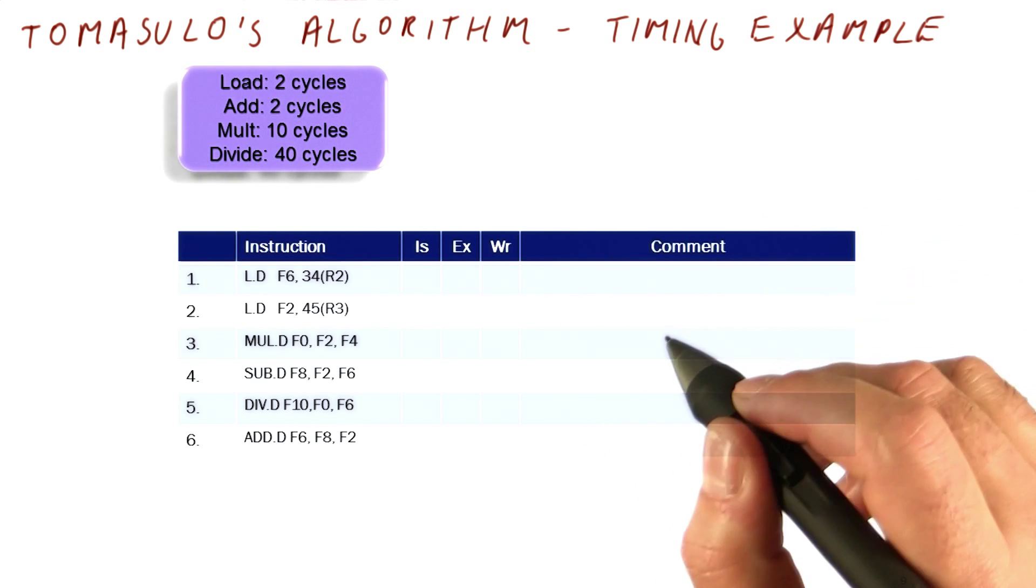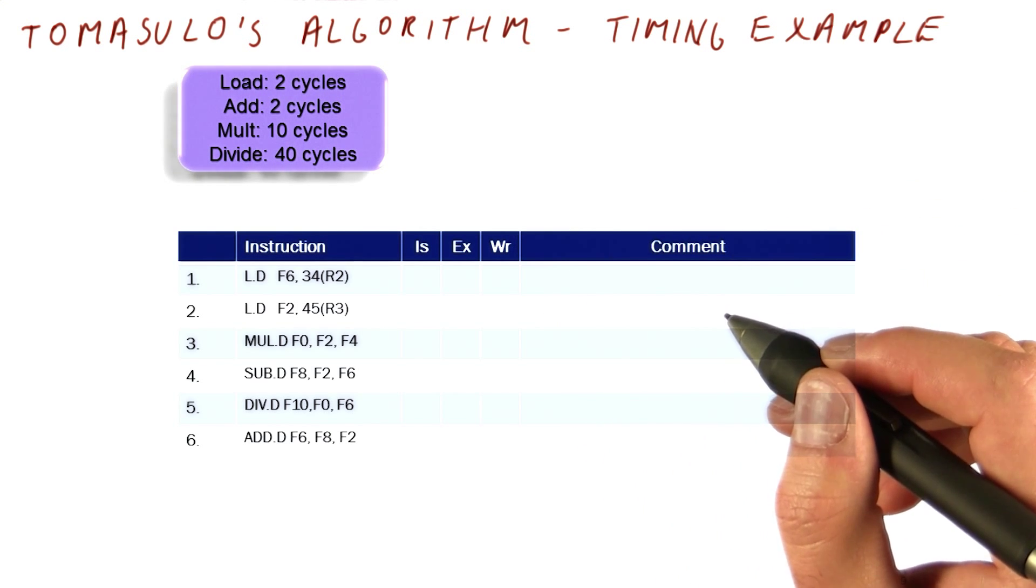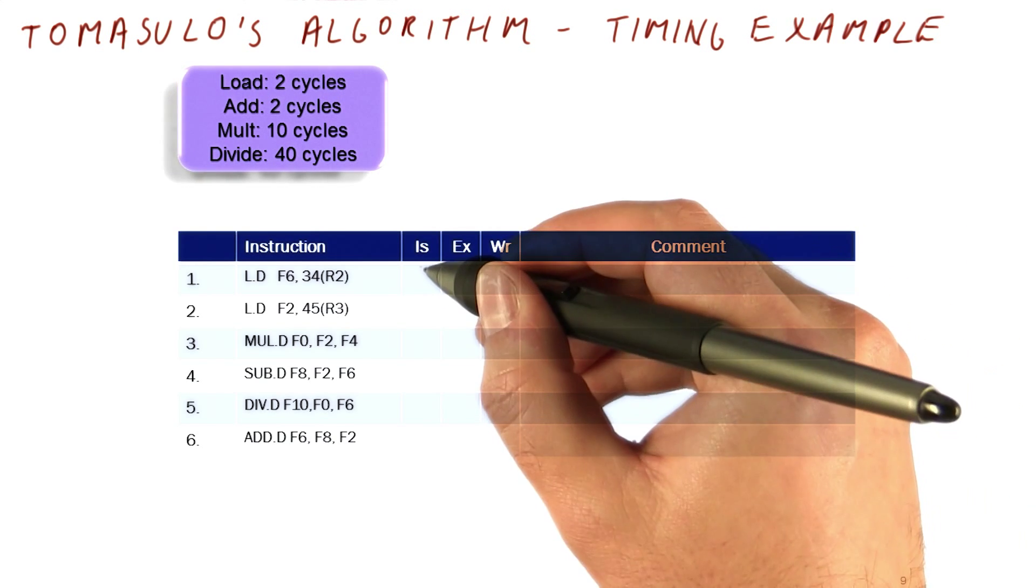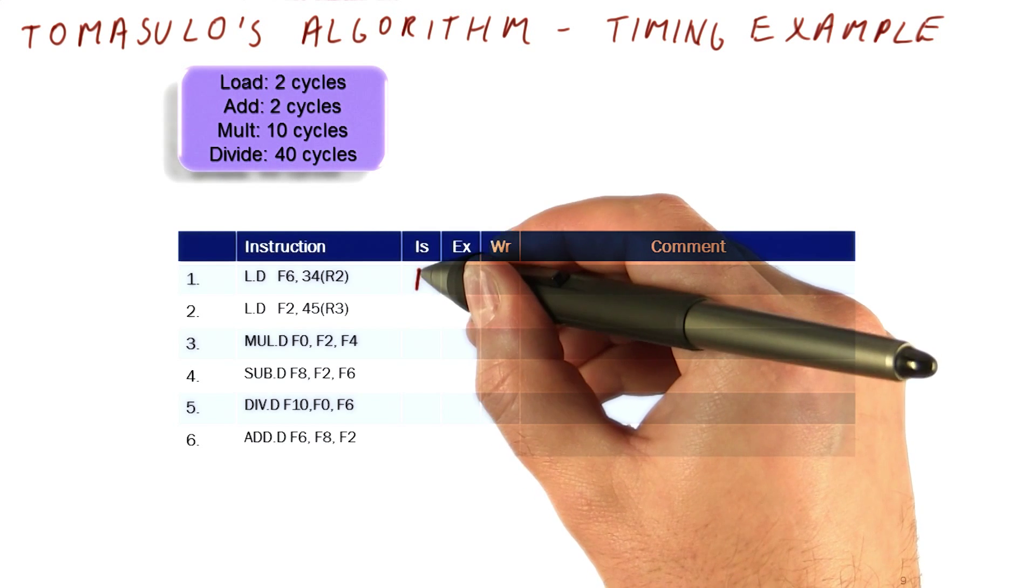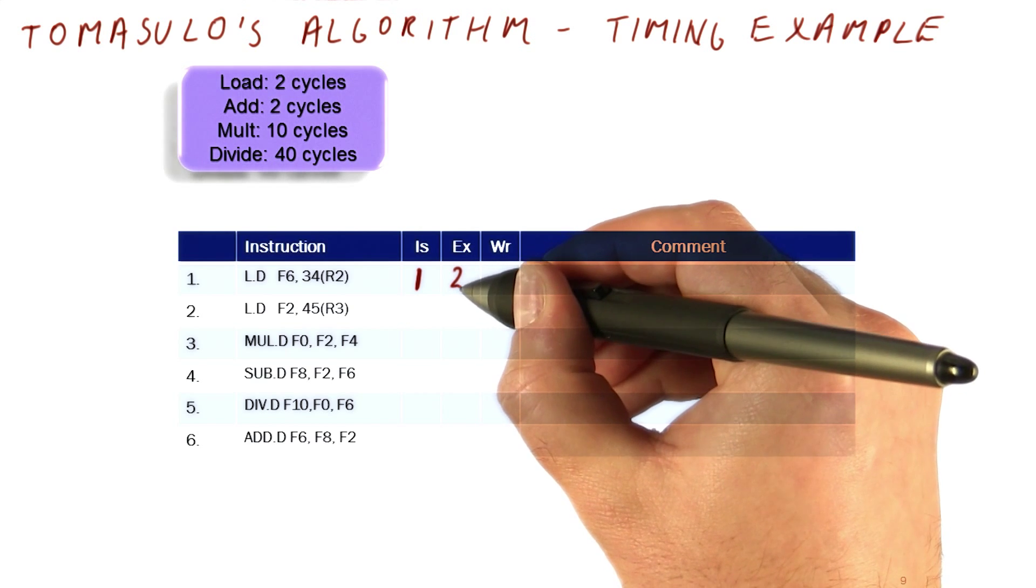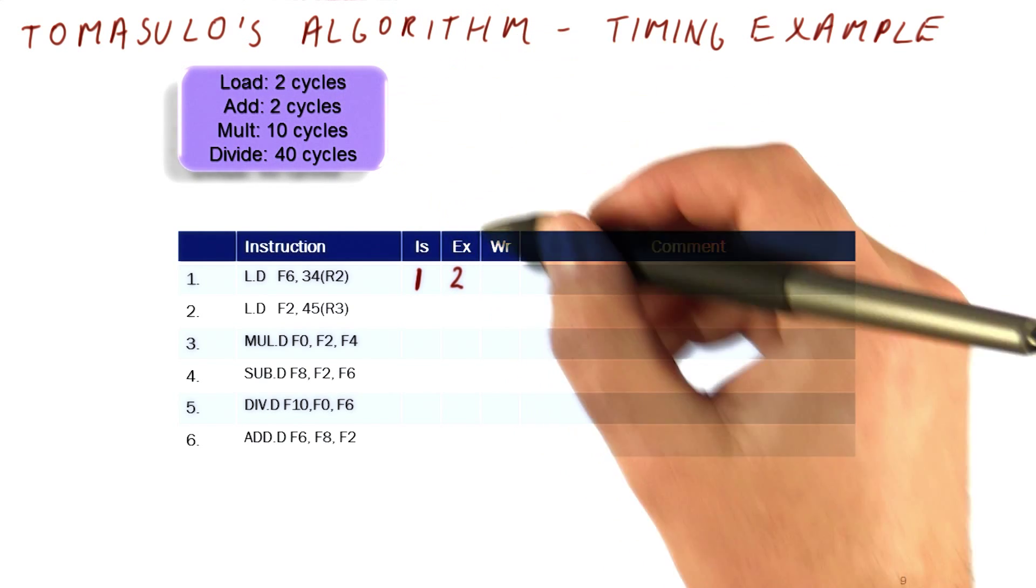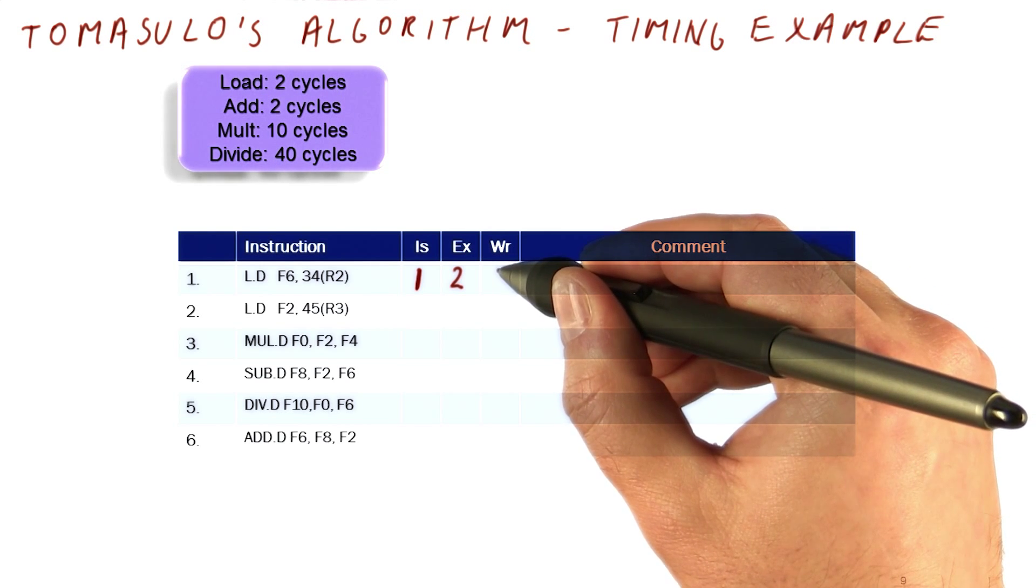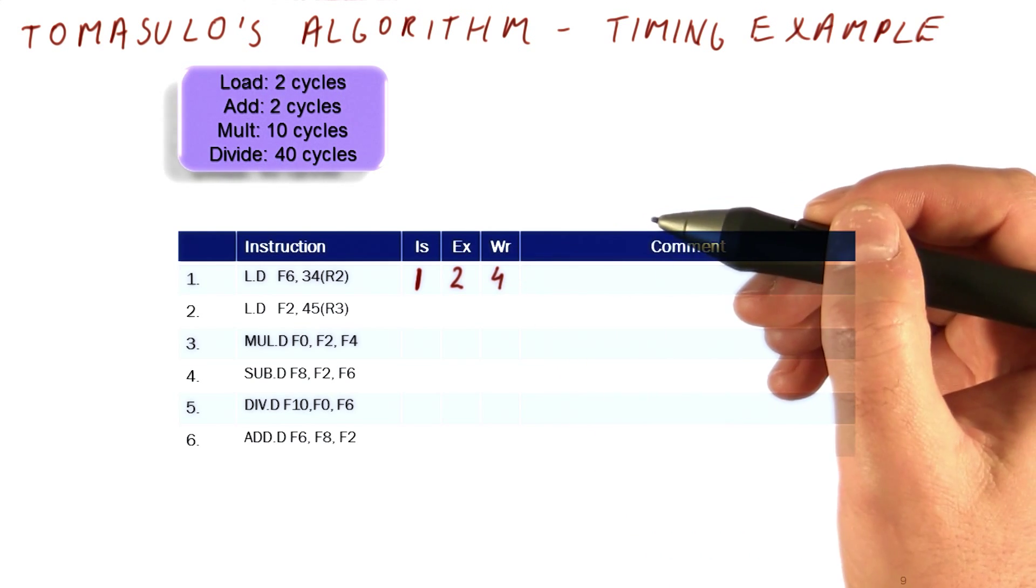What's going to happen is we need to know how many reservation stations we have for each type of instructions, and that's the only thing we're going to be missing a little bit. So basically, in the first cycle, we know we can issue this and nothing else will happen. In the next cycle, we know we can execute this, and because it takes three cycles, we know we're going to try to write it in cycle four. So you mark this tentatively now for cycle four.